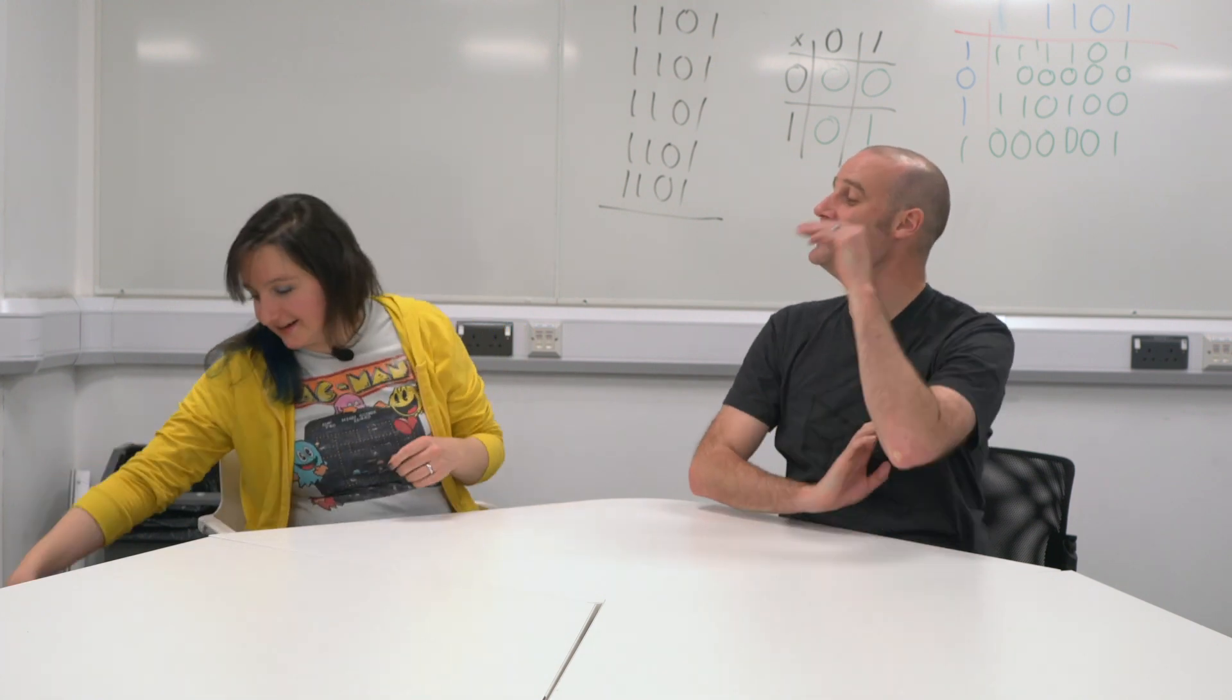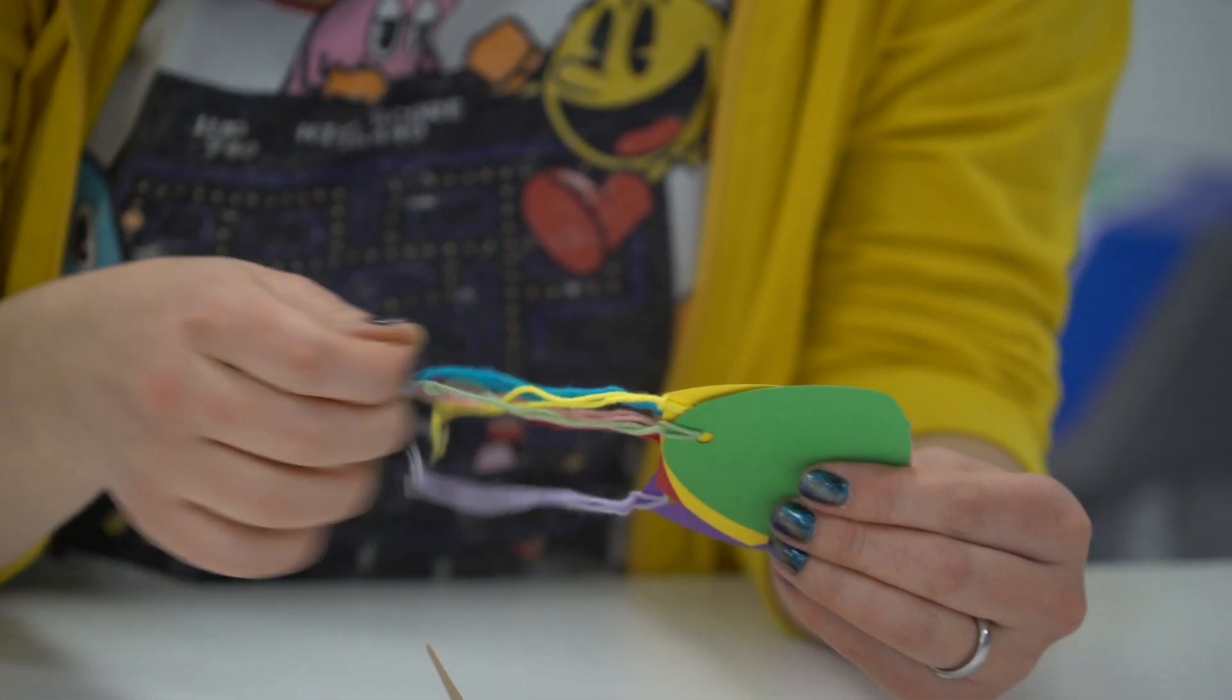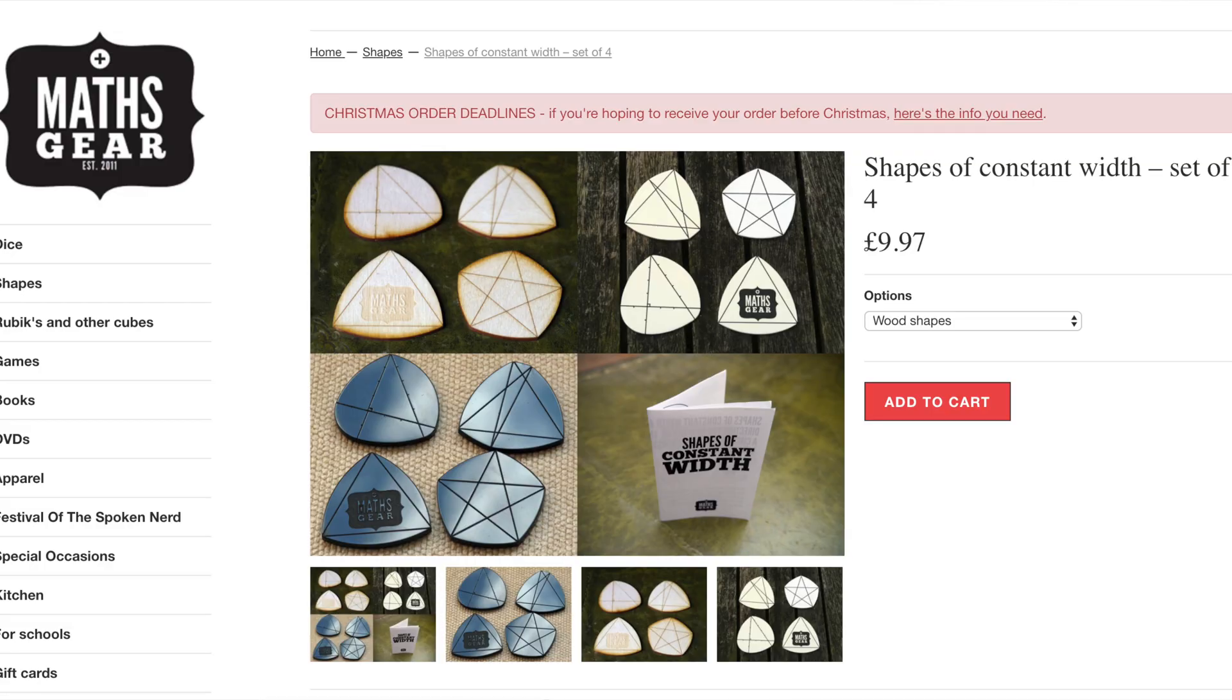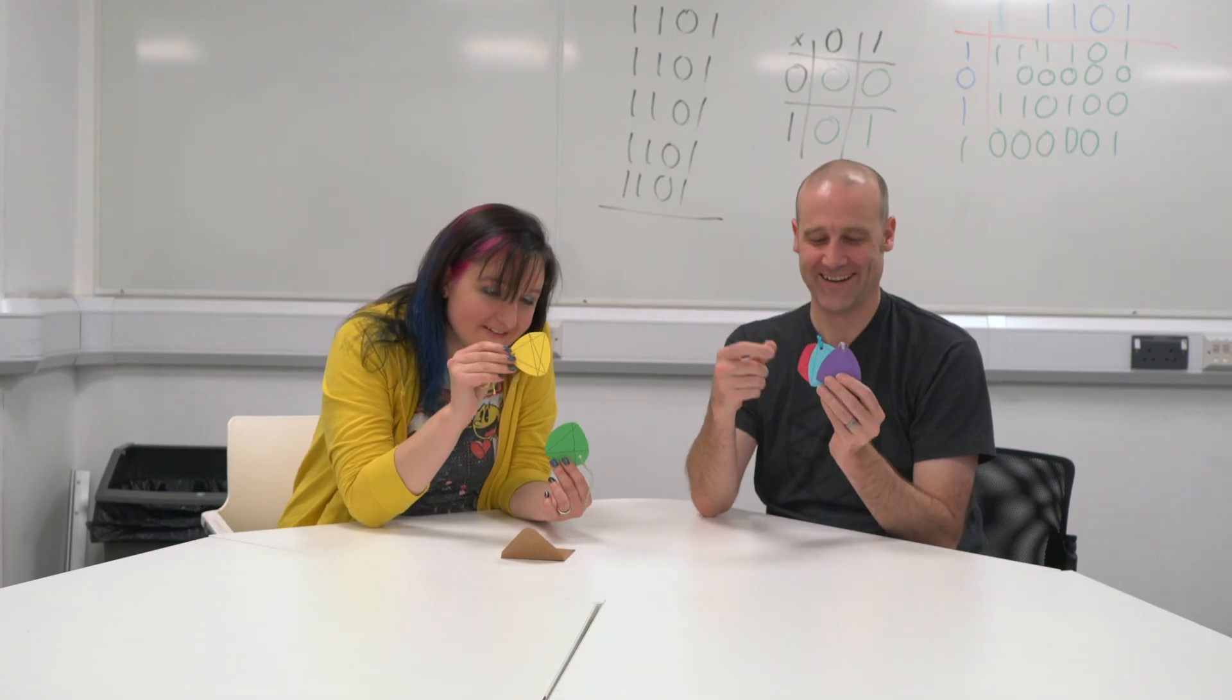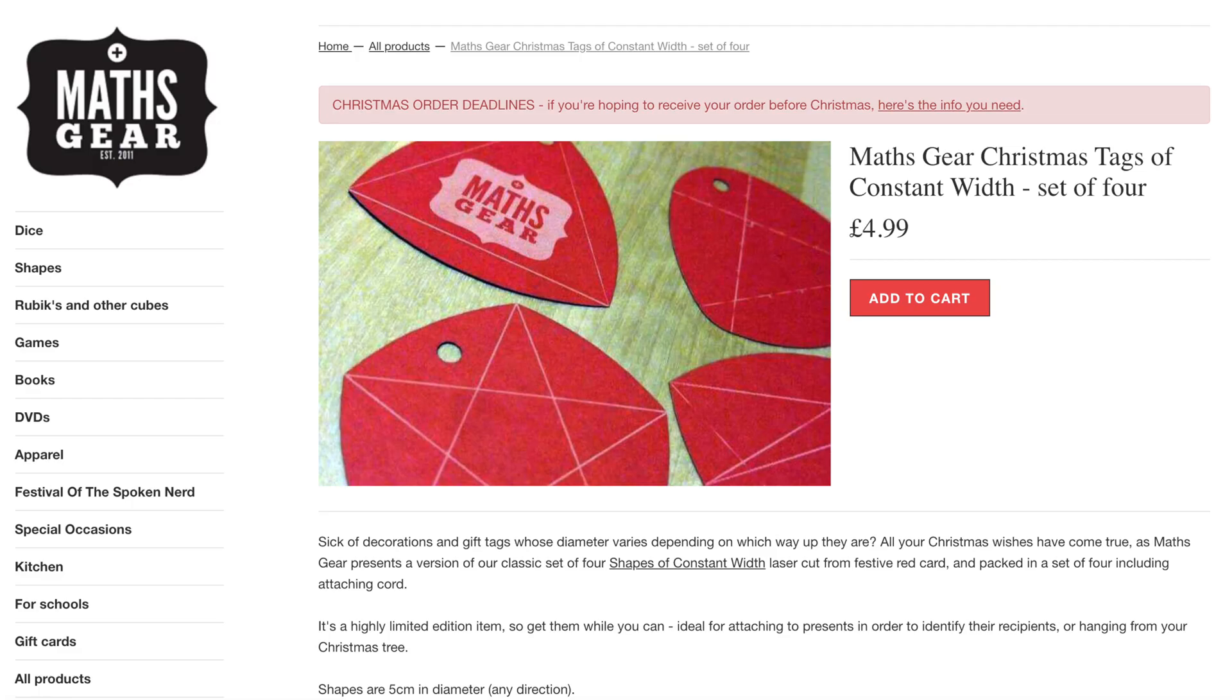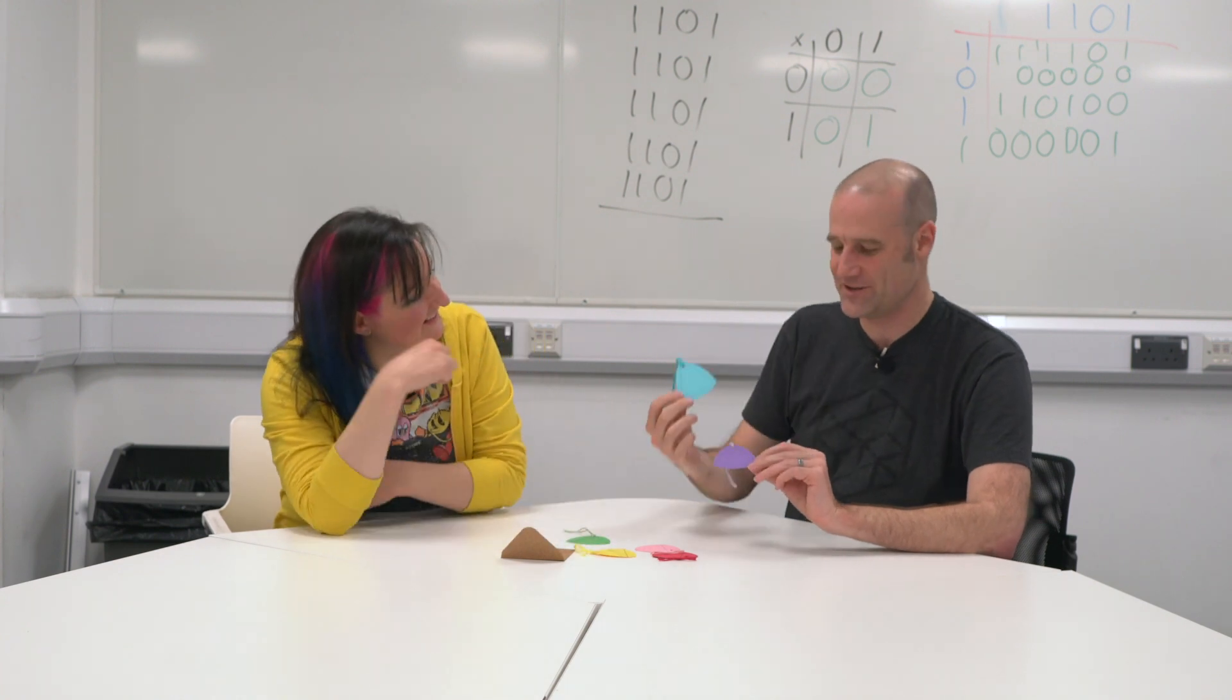We've got a couple of Christmassy products. I can see what you made to the head of product development. So we're going to have some gift tags for wrapping Christmas presents. Matt can see what these are, he's so excited, I've not seen them before. These are gift tags of constant width. That's so cool. So if you're familiar with our shapes of constant width, we've got gift tags that are in the same shape. So whichever way up these gift tags are, they're the same diameter. That's really nice.